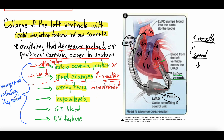Hypovolemia is a big one. A patient comes in, they've been sick, they haven't been eating or drinking, they've been taking three times the dose of their diuretic, and they're starting to have suction events. That hypovolemia decreases the amount of volume in the left ventricle, which increases the ability of the left ventricle to collapse as blood is sucked out, which then increases suction events. The treatment for hypovolemia is to give volume, but we have to be careful because not all suction events are from hypovolemia, and in some pathologies, giving volume can be detrimental.